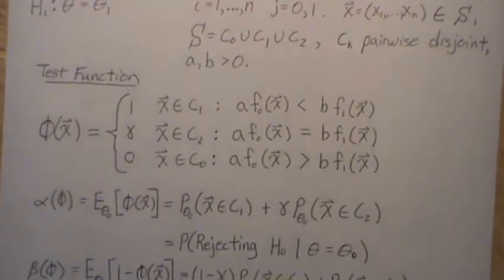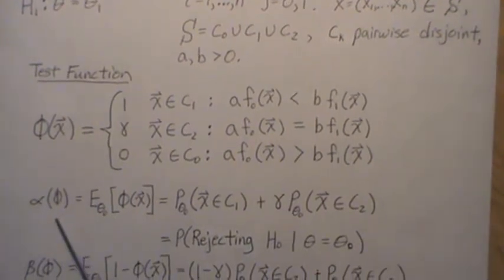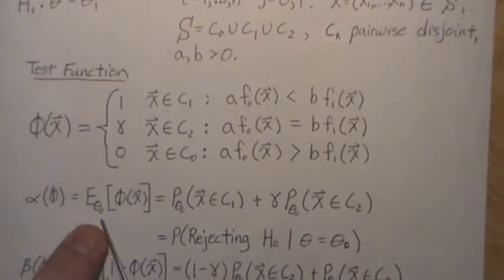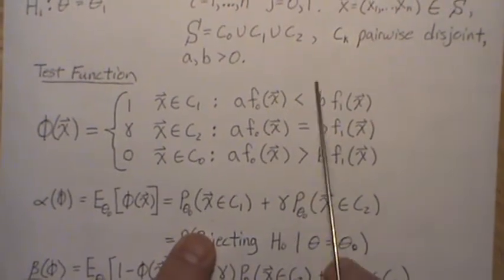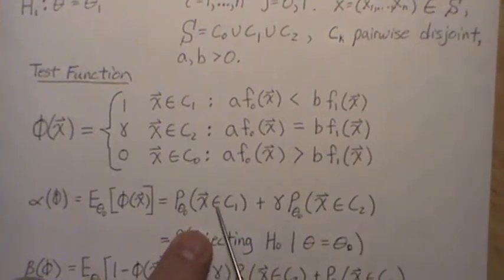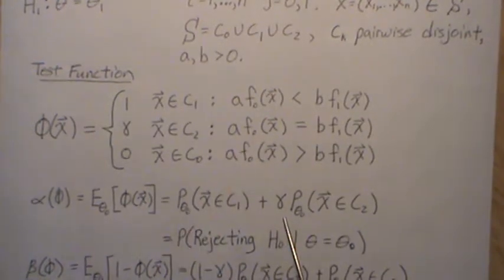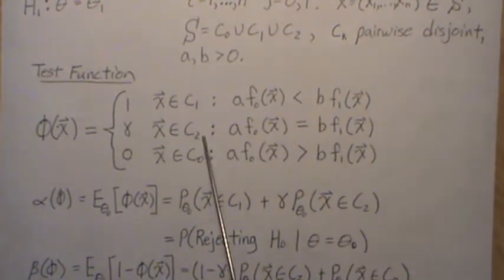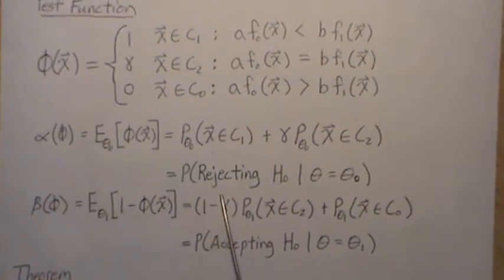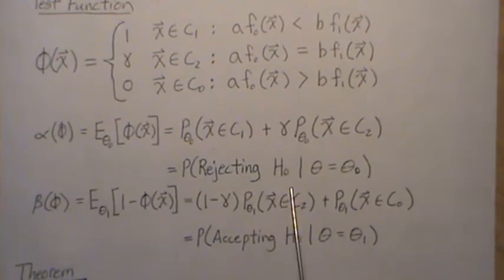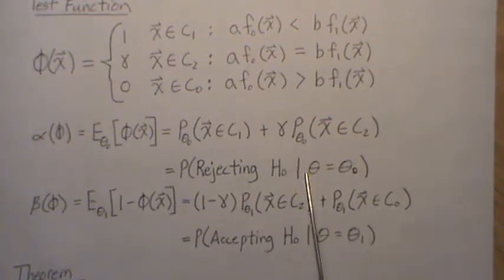Now the size of the test, alpha of phi, is dependent upon this test. It's expected value of phi, which is 1 times the probability of being in here plus gamma times the probability that X is in region C2, which we've seen in the previous video is the probability of rejecting H0 when H0 is true. So this is a Type I error.